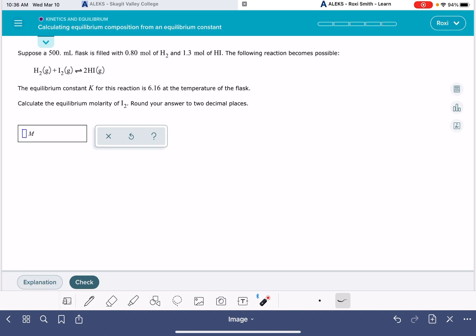In this problem, you will be given a balanced chemical equation and some information about some of the molecules in the reaction, but not all of them. You'll be given the equilibrium constant and you'll be asked to calculate the equilibrium concentration of one of the substances in the system. So to solve this problem, we're just going to jump right in.